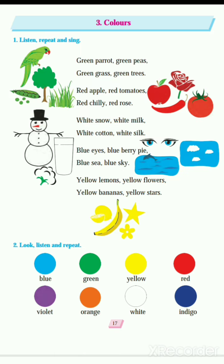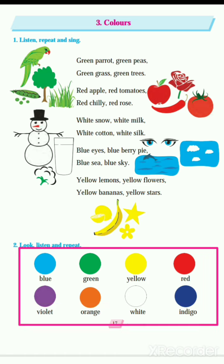In this poem we have seen only five colors. But on the bottom of the page, many more colors are given — eight colors. You should understand which colors they are and learn their names. First is blue, second green, third yellow, fourth red, fifth violet, sixth orange, seventh white, and eighth indigo.